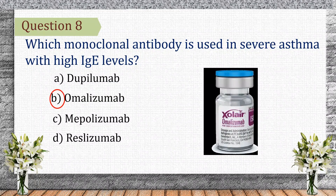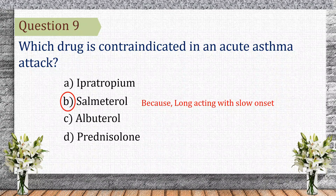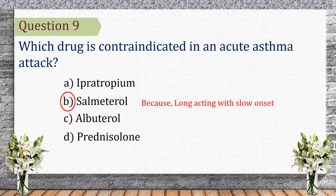Mepolizumab targets IL-5 for eosinophilic asthma. Reslizumab is also an anti-IL-5 drug for eosinophilic asthma. Question 9. Which drug is contraindicated in an acute asthma attack? The correct answer is B: salmeterol. Salmeterol is a long-acting beta-2 agonist with a slow onset and is not suitable for acute relief. Ipratropium can be used in acute exacerbations, though less effective than short-acting beta-2 agonists. Albuterol is a short-acting beta-2 agonist used for acute attacks. Prednisolone, a systemic corticosteroid, helps in acute attacks but takes time to work.